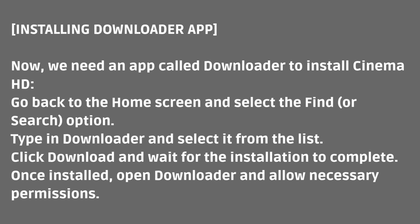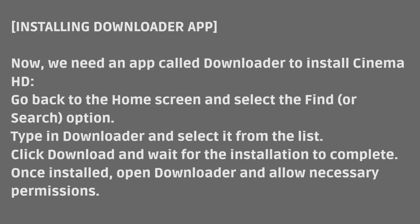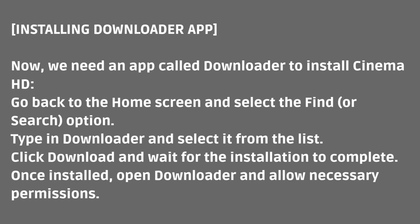Now we need an app called Downloader to install Cinema HD. Go back to the home screen and select the Find or Search option. Type in Downloader and select it from the list. Click Download and wait for the installation to complete. Once installed, open Downloader and allow necessary permissions.